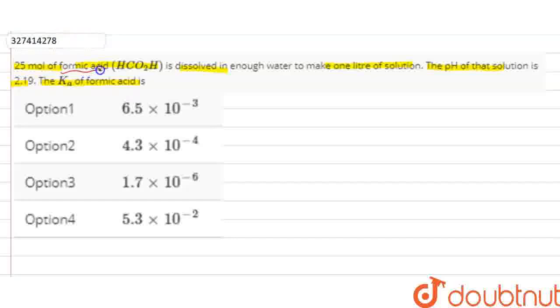The question has given me that my formic acid is HCOOH. It has 25 moles dissolved in water to make 1 liter of solution. And the solution has a pH of 2.19. The question asks for the acid ionization constant value.